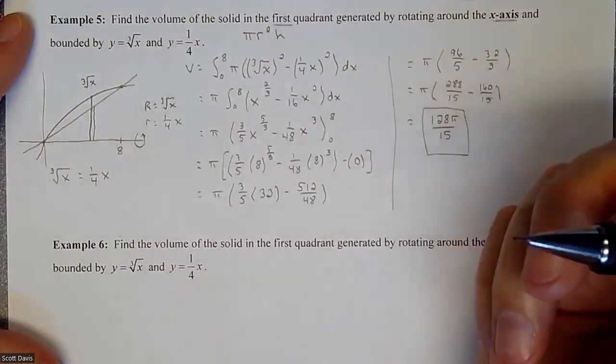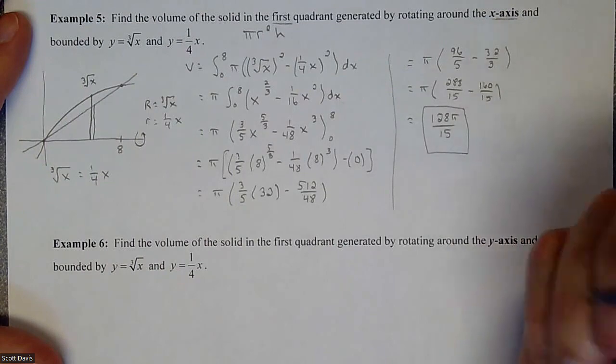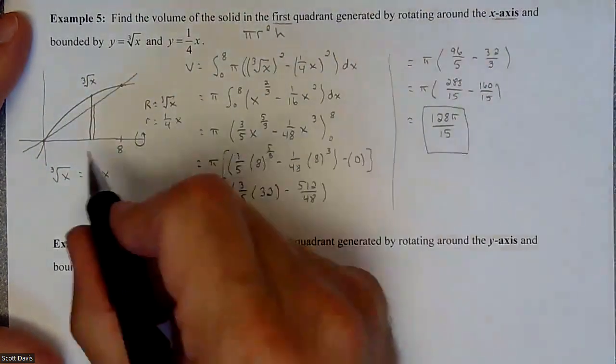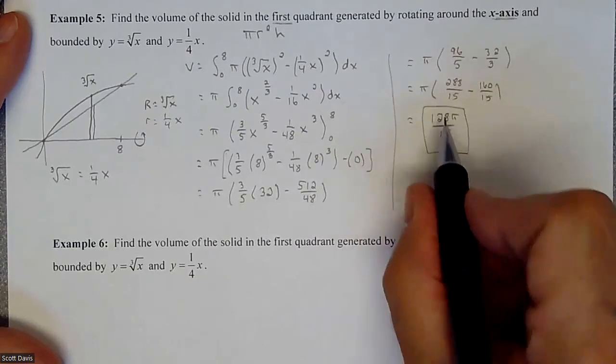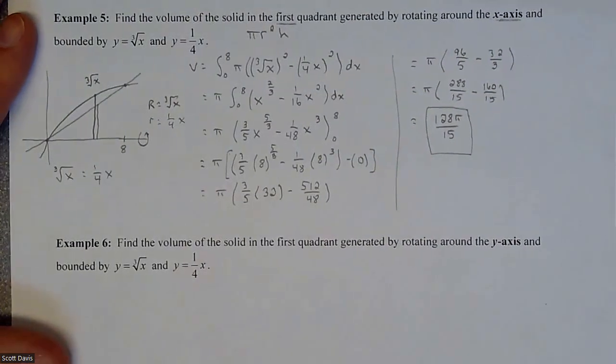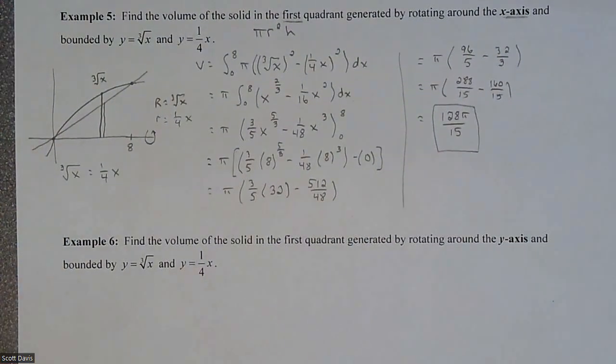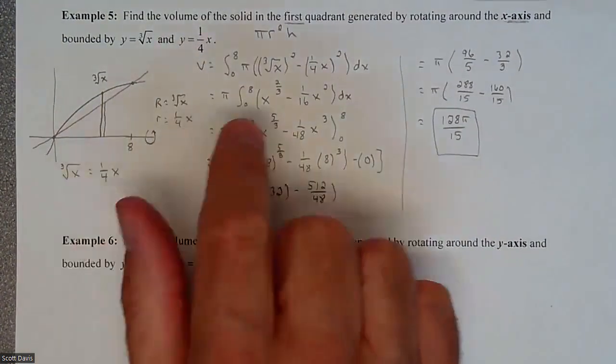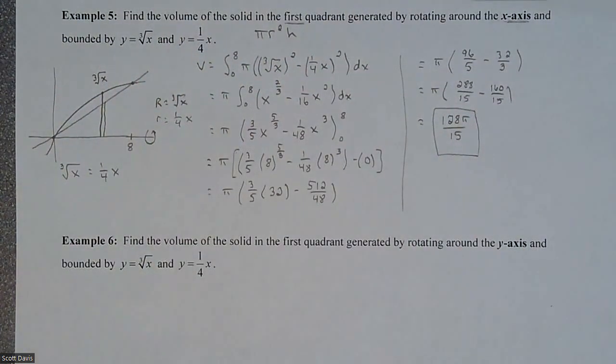It kind of creates a big pac-man looking thing. That volume, that little sliver all the way around, kind of creates that. So that was doing a washer method where you have to find a big radius and subtract out a small radius, but other than that the math is still the same.